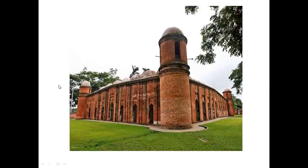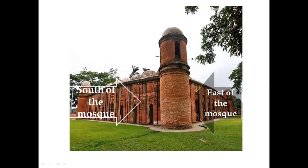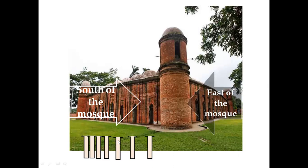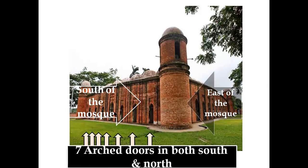Let's move to another picture. This is the south side and this is the east side of the mosque. We have already learned that there are 11 arch doorways on the east. On the south side there are seven arch doorways, and on the north side there are also seven arch doorways.